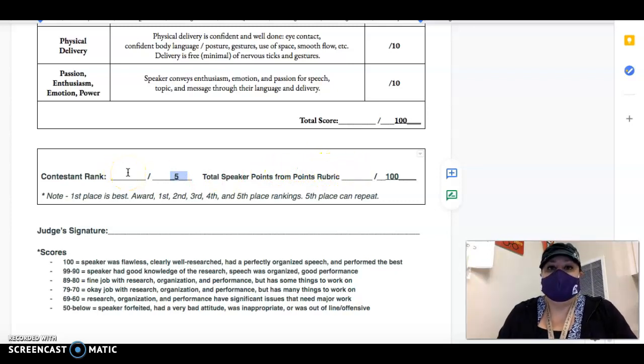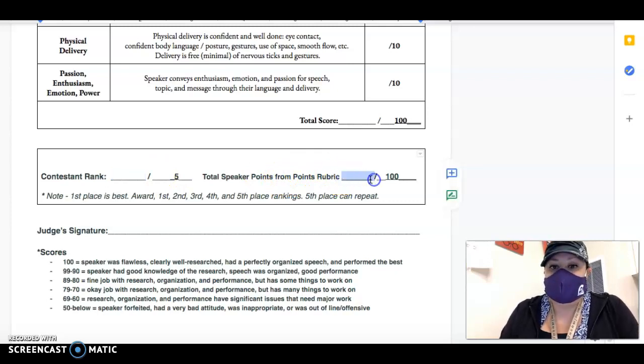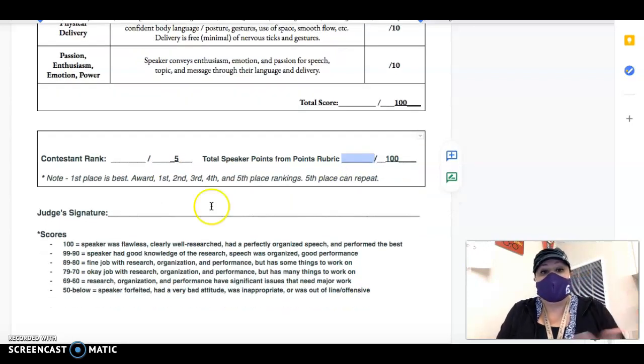So if you had more than five speakers the lowest number five can repeat and they will then get their overall ranking and maybe even a medal at the tournament based on not only were they first in this round or second or third plus their speaker points. So both of these together are very important that you're considering them carefully.